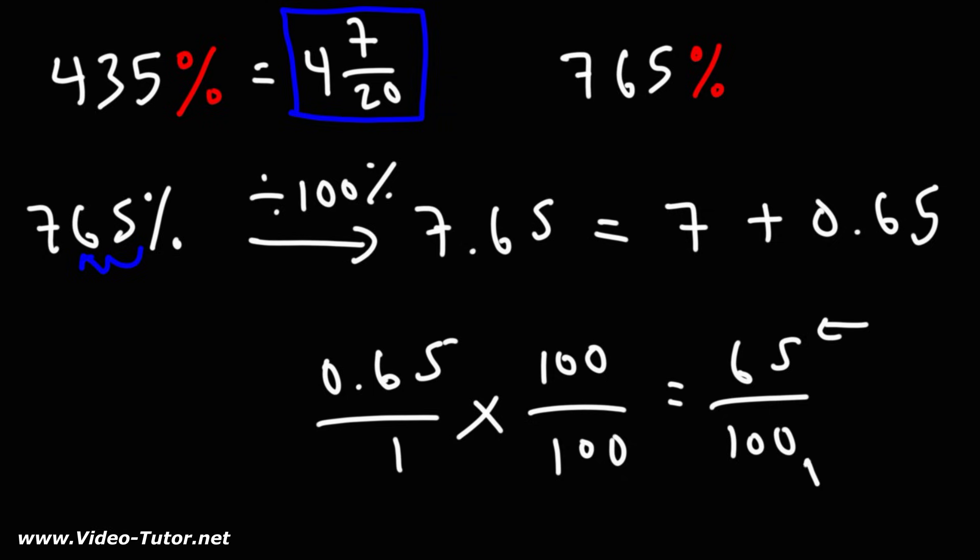Anytime a number ends in a 5 or a 0, they're divisible by 5. So dividing both of these numbers by 5, it will give us 13 over 20.